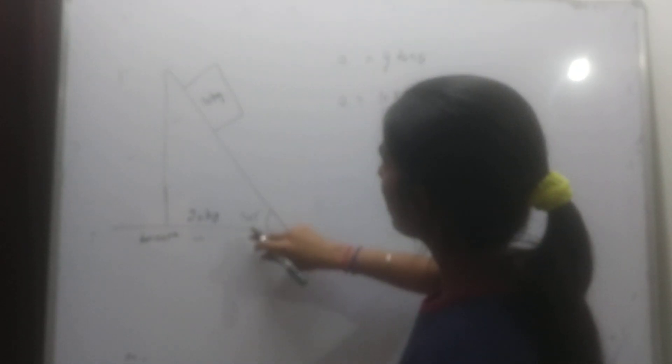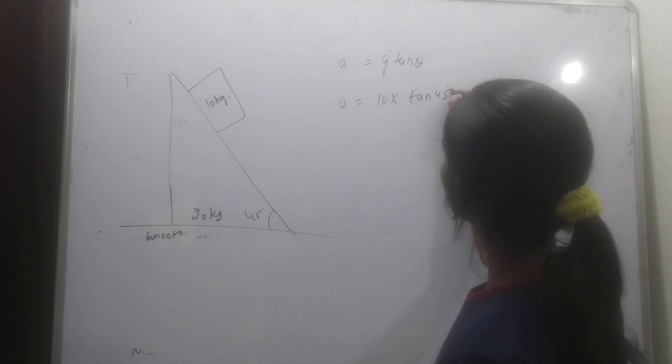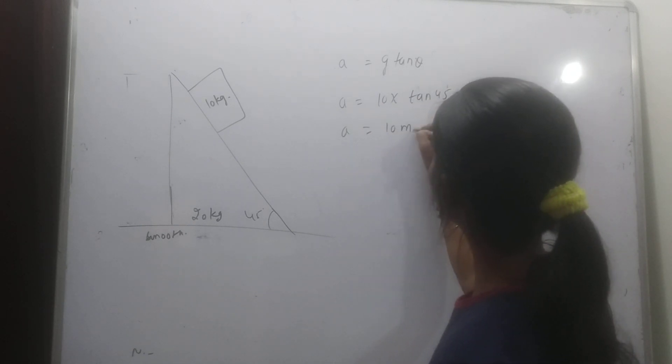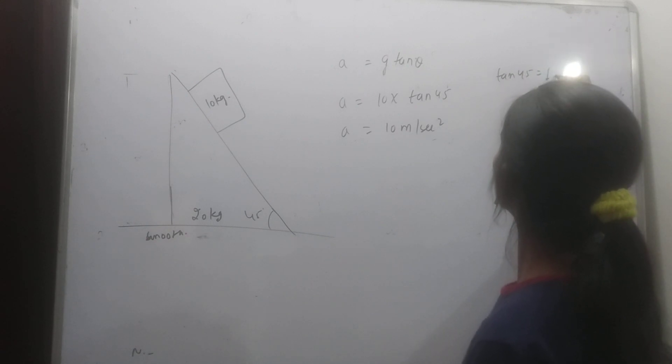So acceleration is g tan 45°. What is tan 45°? Tan 45° is 1. Therefore, acceleration is 10 meters per second squared, because g tan 45° equals 10 times 1.